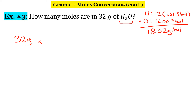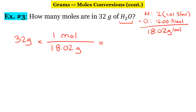The grams are going to go on the bottom, so there are 18.02 grams for every one mole of water. When we enter this in our calculator it's 32 times 1 divided by 18.02 — make sure you use parentheses — and you should get an answer of 1.775804.